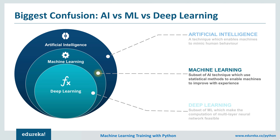Now coming to deep learning: deep learning is a subset of machine learning where similar machine learning algorithms are used to train deep neural networks so as to achieve better accuracy in those cases where the former was not performing up to the mark. I hope you now understand that machine learning, AI, and deep learning are all three different things.